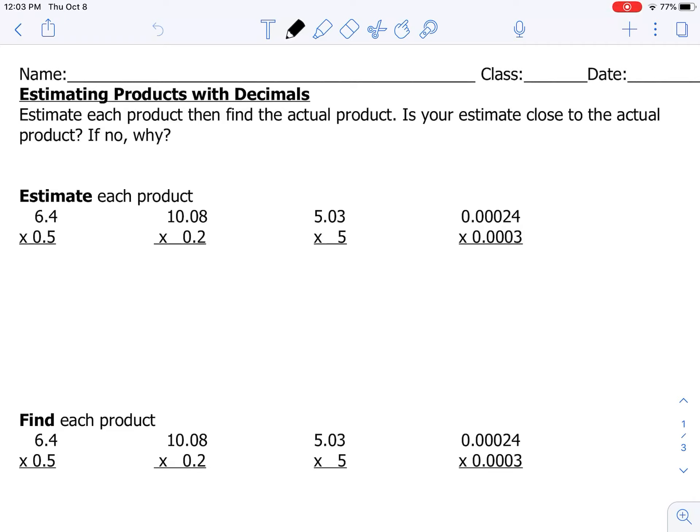First we want to estimate each product, then find the actual product. We want to figure out if our estimate is close to the actual product, and if it's not, we want to figure out why. All right, so let's start off with the first one.